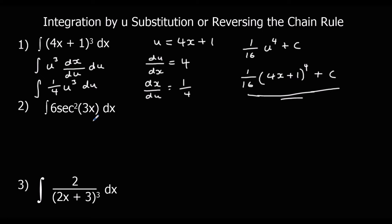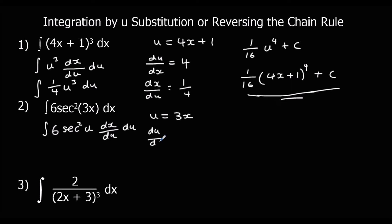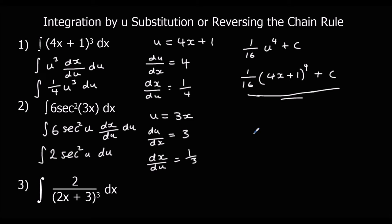For the second one, the bracket is 3x, so we say u equals 3x. That gives us the integral of 6 sec squared u times dx/du with respect to u. du/dx is 3, so dx/du is one third. 6 times one third is 2, so we integrate 2 sec squared u with respect to u. Integrating sec squared u gives tan u, so we get 2 tan u plus c, and changing u back to 3x gives 2 tan(3x) plus c.